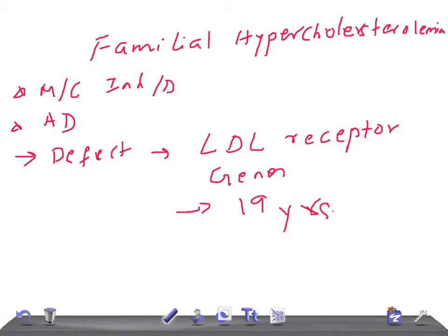There are five classes of LDL receptor mutations in familial hypercholesterolemia. Before discussing the classes, let's talk about what happens when there is a mutation of LDL receptors.